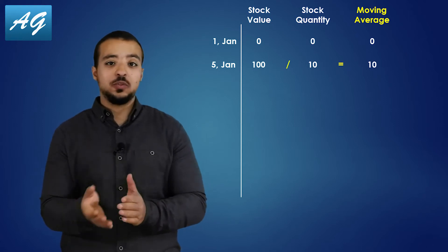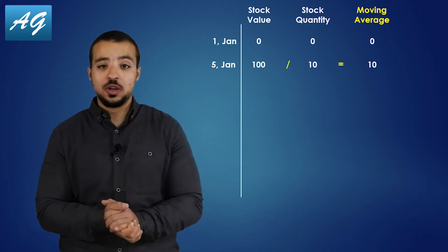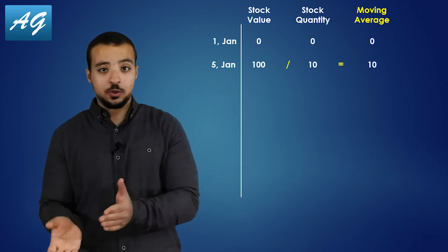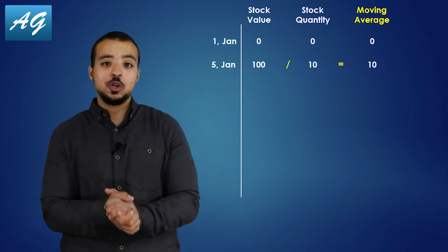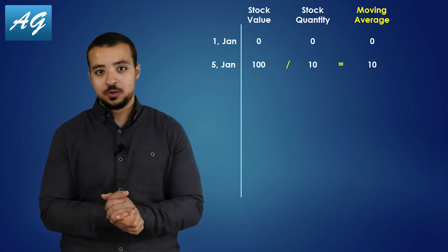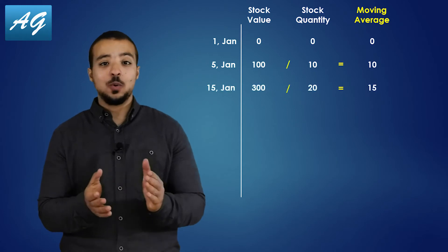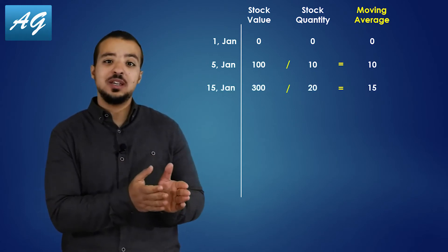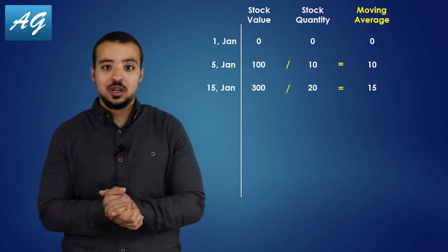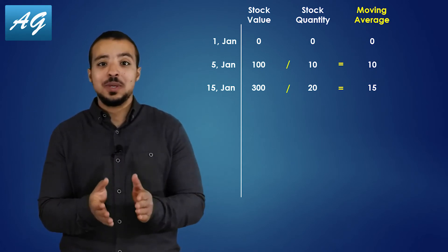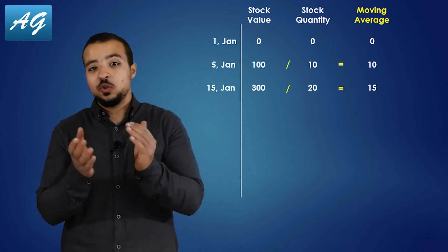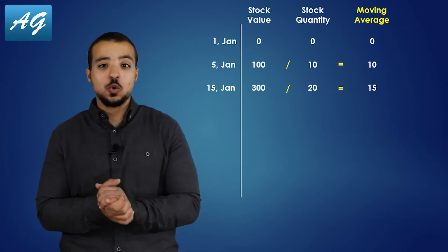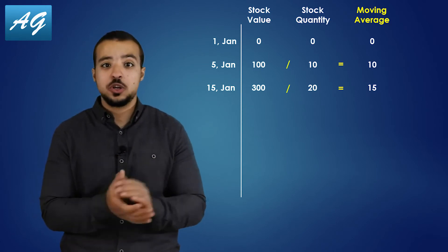Now let's assume that on the 15th of January, we do another purchase. This time, we are going to buy another 10 chairs, but the price is going to be 20 USD per chair. So the total inventory cost is going to change from 100 USD to 300 USD, and the total quantity is going to be 20 chairs. If you divide 300 by 20, the moving average cost is now 15 USD per chair.